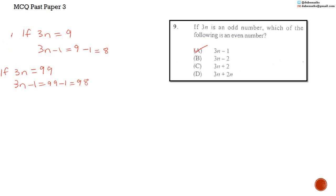B. 3N minus 2 would be equal to 9 minus 2, which is equal to 7. And if 3N was equal to 99, then 3N minus 2 would be equal to 99 minus 2, which is equal to 97. Neither 7 nor 97 is even, so we know that B is wrong.